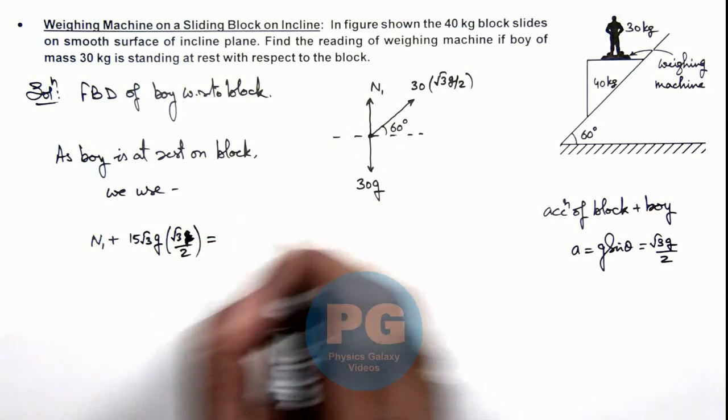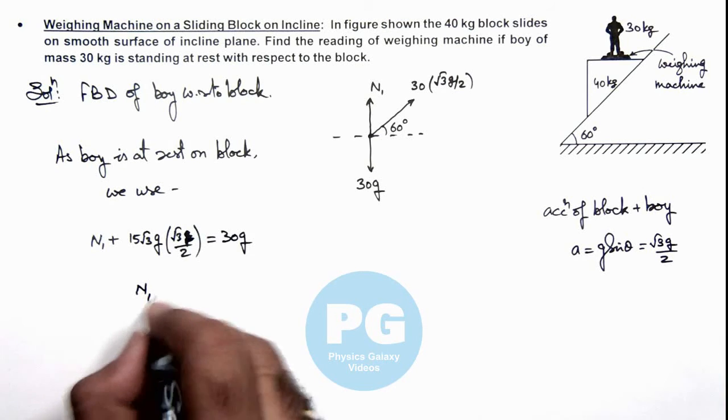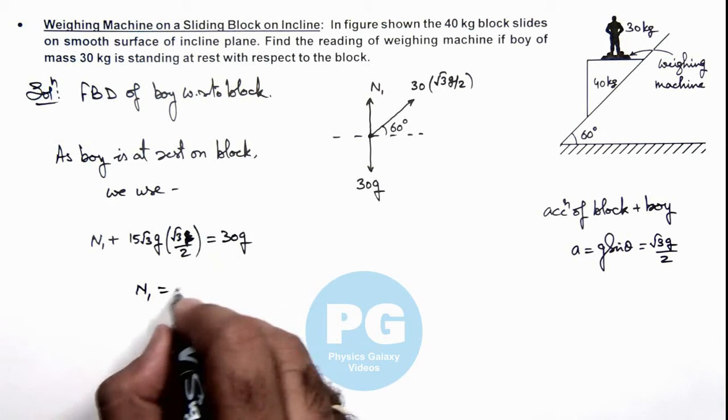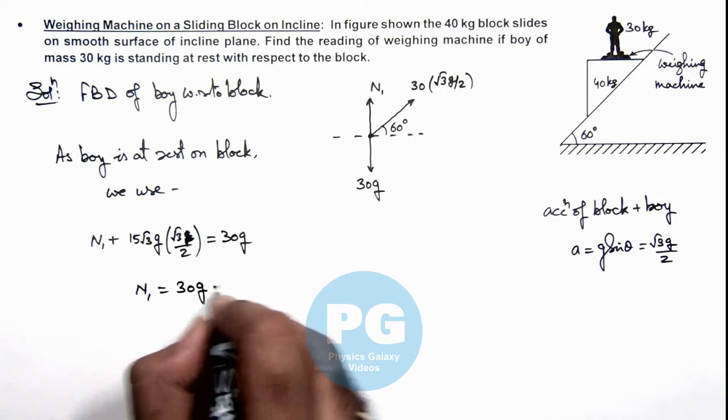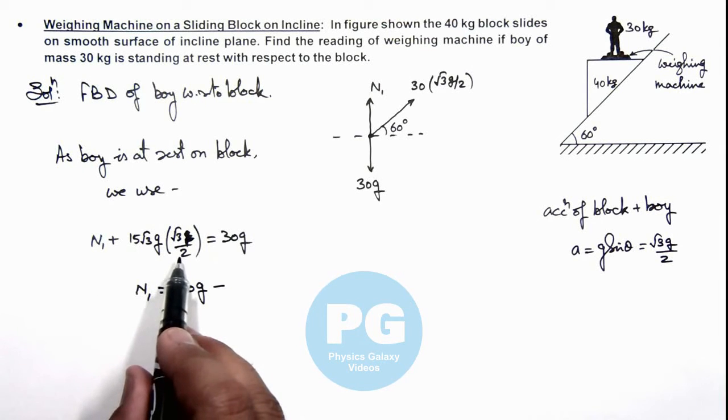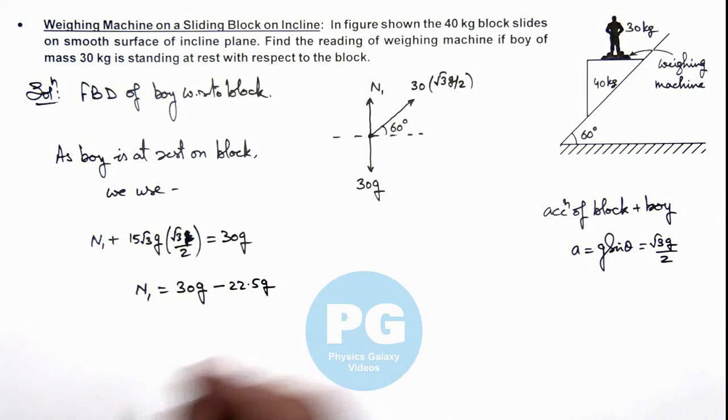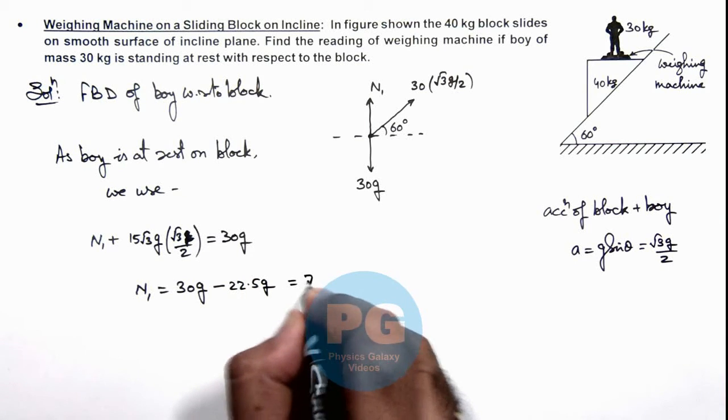So in this situation the value of N₁ we are getting is 30g minus, and here the value will be 45/2, that will be 22.5g. So here this is equal to 7.5g.